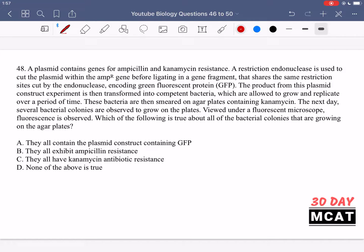Question 48 says, it's a long one. So let's just work through it step by step. It's saying that a plasmid contains genes for ampicillin and canamycin resistance. A restriction endonucleus is used to cut the plasmid within the AMP-R gene before ligating in a gene fragment that shares the same restriction sites cut by the endonucleus, encoding green fluorescent protein or GFP. The product from this plasmid construct experiment is then transformed into competent bacteria, which are allowed to grow and replicate over a period of time. These bacteria are then smeared on agar plates containing canamycin. The next day, several bacterial colonies are observed to grow on the plates. Viewed under a fluorescent microscope, fluorescence is observed. Which of the following is true about all of the bacterial colonies that are growing on the agar plates?